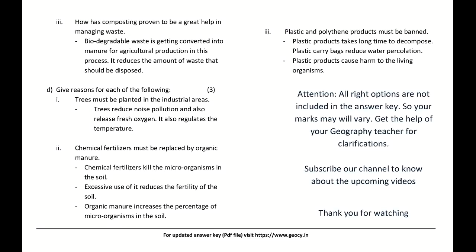Give reasons: Trees must be planted in industrial areas — trees reduce noise pollution, release fresh oxygen, and regulate temperature. Chemical fertilizers must be replaced by organic manure — chemical fertilizers kill microorganisms in the soil and reduce its fertility, while organic manure increases the percentage of microorganisms. Plastic and polythene products must be banned — plastic takes a long time to decompose, plastic carry bags reduce water percolation, and plastic products cause harm to living organisms.